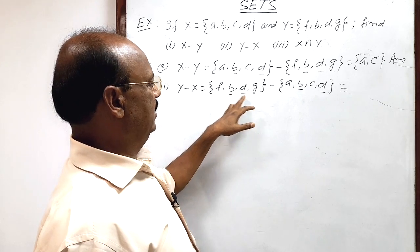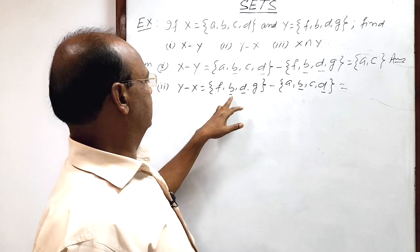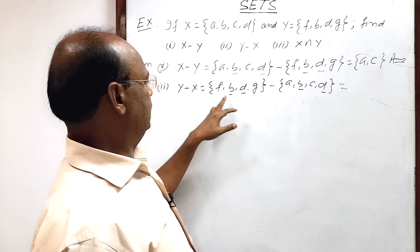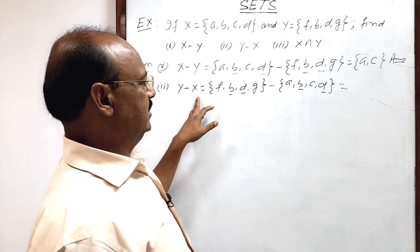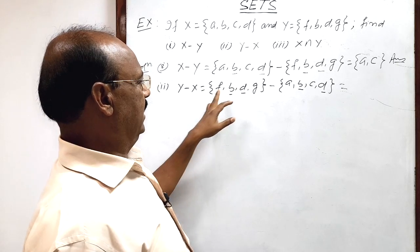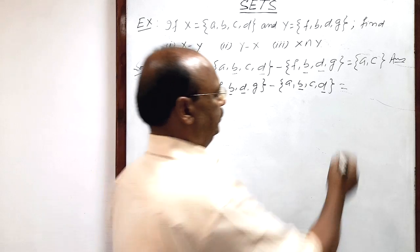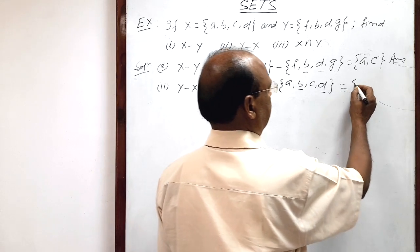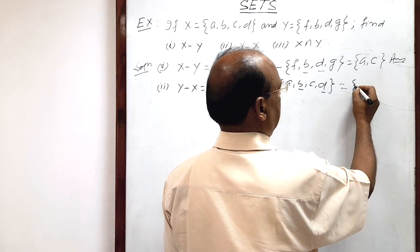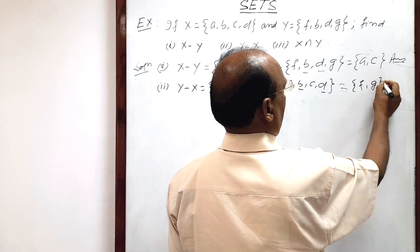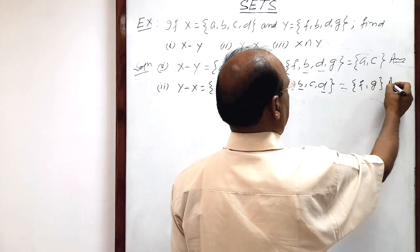The common elements in both sets are b and d. After removing b and d from set Y, we get Y minus X as a set having elements f and g. That is the answer.